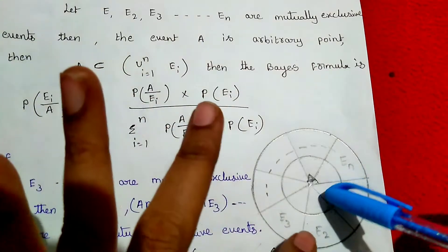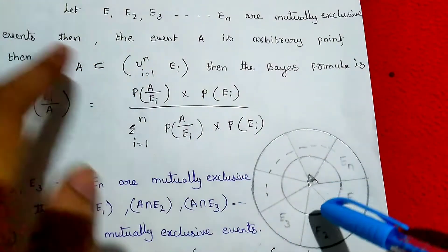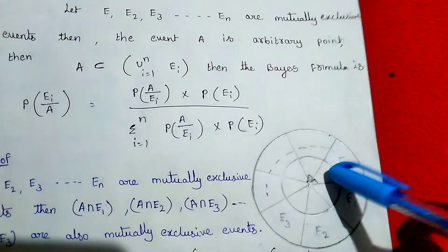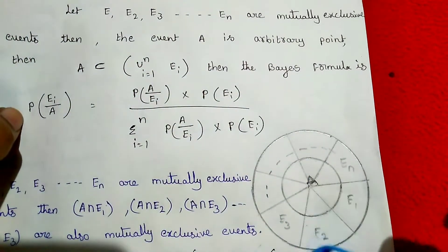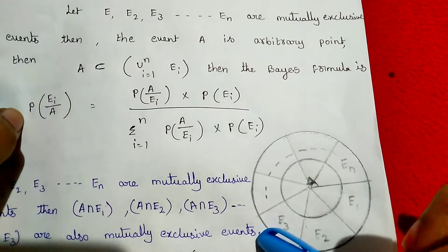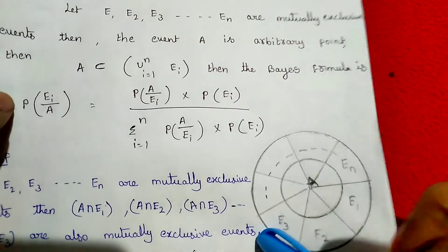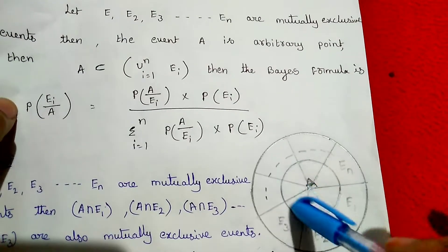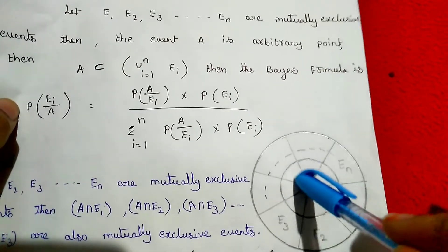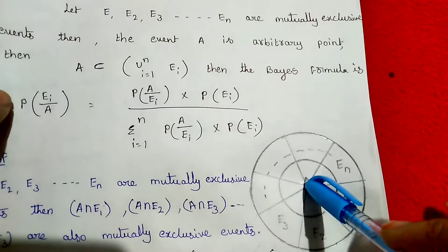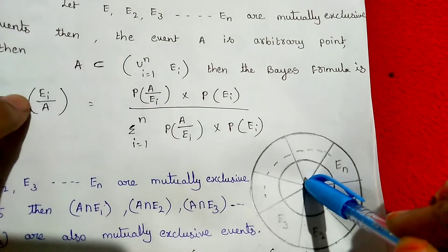So this is E1 area, E2 area, E3 area. Here A is the arbitrary point, the central point.